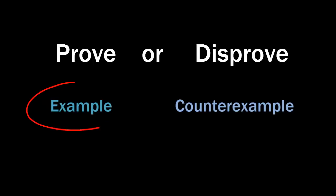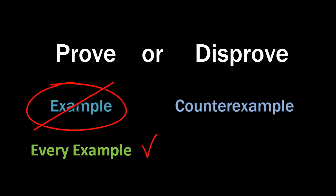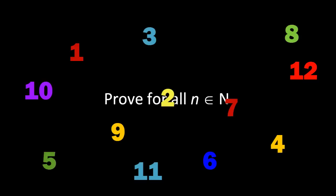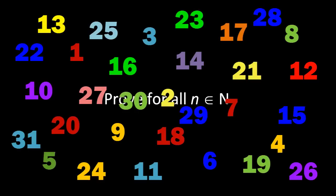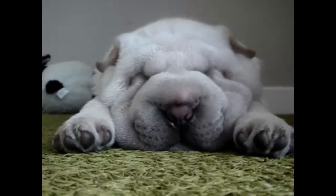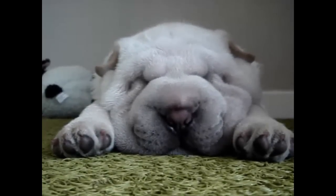Turns out, not so much. In order to prove something, you need to have every single example proven. Imagine you had to prove something for all of the natural numbers. You would have to show that n equals 1 is true, n equals 2 is true, all the way up to infinity. That would be exhausting, showing an infinite amount of examples.